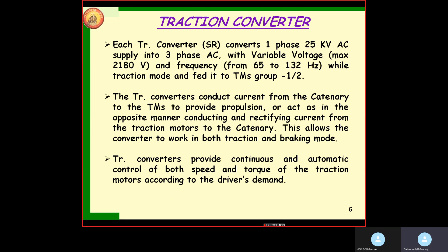Each traction converter is a single-phase 25kV AC, variable voltage and variable frequency in a range of 0–32 Hz. The traction converter conducts current from the catenary to the traction motor in propulsion. When we regenerate, the three-phase power is converted into single-phase and fed back to the catenary wire. These are both modes — traction and braking modes. Traction converters provide continuous and automatic control of speed and torque to the traction motor.